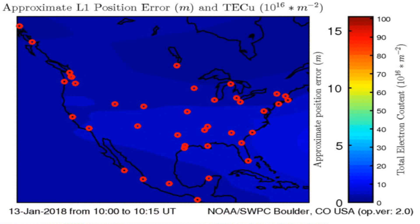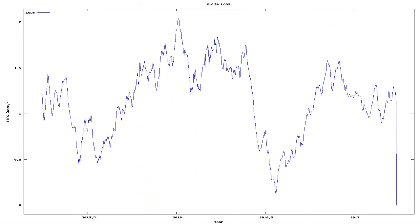And here we see the total electron content above the Earth. Anomalies in total electron content have sometimes preceded earthquakes below that area on Earth.